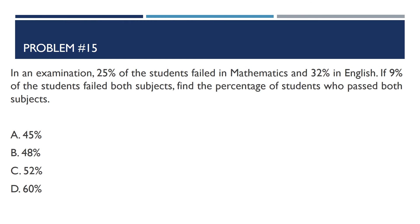Problem number 15: In an examination, 25% of the students failed in mathematics and 32% in English. If 9% of the students failed both subjects, find the percentage of students who passed both subjects. The answer is 52%.